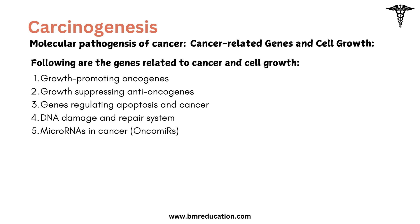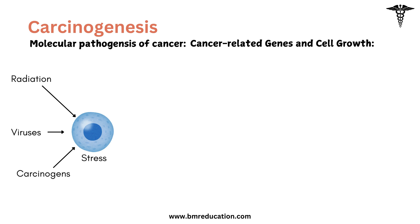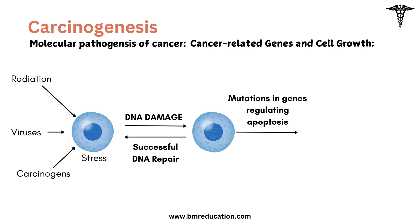Before understanding each gene related to cancer, let's understand how a tumor forms. Due to stress on cells like radiations, chemicals, viruses, or any other etiological agent, the cell DNA and other organelles are damaged, which can be reversible by DNA repair mechanisms. If the damage is irreversible, the cell activates apoptosis. But if there is a mutation in genes regulating apoptosis leading to inhibition of apoptosis, mutated cells form, activating oncogenes, anti-oncogenes, and apoptosis regulating genes, causing the cell to proliferate and form a tumor.